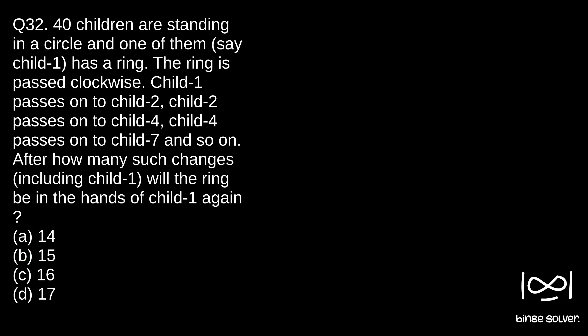Next question, question 32. 40 children are standing in a circle and one of them has a ring. The ring is passed clockwise. Child 1 passes on to child 2, child 2 passes on to child 4, child 4 passes on to child 7, and so on. After how many changes, including child 1, will the ring be in the hands of child 1 again?